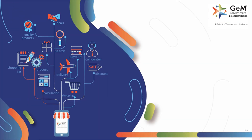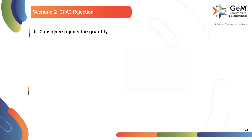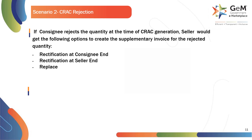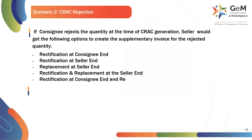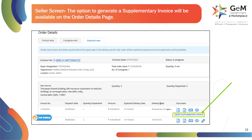In this section, we will explore how to create a supplementary invoice in the event of quantity rejection during the CRAC — Consignee Receipt and Acceptance Certificate — generation process. If the consignee rejects the quantity at the time of CRAC generation, the seller would get the following options to create the supplementary invoice for the rejected quantity: rectification at consignee end, rectification at seller end, replacement at seller end, rectification and replacement at seller end, or rectification at consignee end and replacement with seller end. All the above options will be available to the seller within the delivery period of the contract. Click to create a supplementary invoice against the rejected invoice.